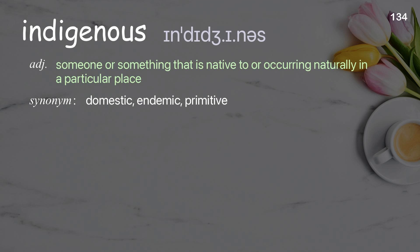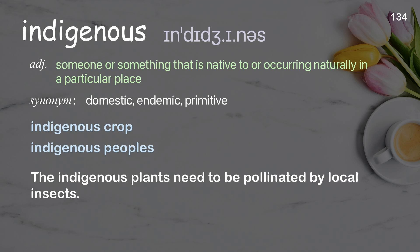Indigenous. Someone or something that is native to or occurring naturally in a particular place. Examples: indigenous crop; indigenous peoples. The indigenous plants need to be pollinated by local insects.